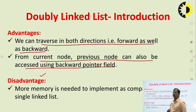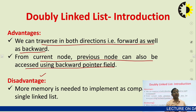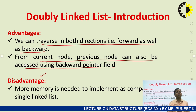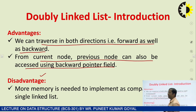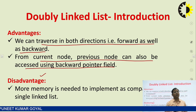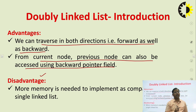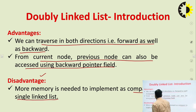Now come to the disadvantage as compared to single linked list. In the single linked list, there is only one address field, so if we want to store one value, we have to allocate memory for one address field. But in the doubly linked list, there are two pointers — backward address field and forward address field — so if we want to store one value, we have two address fields. It will require more memory as compared to the single linked list.